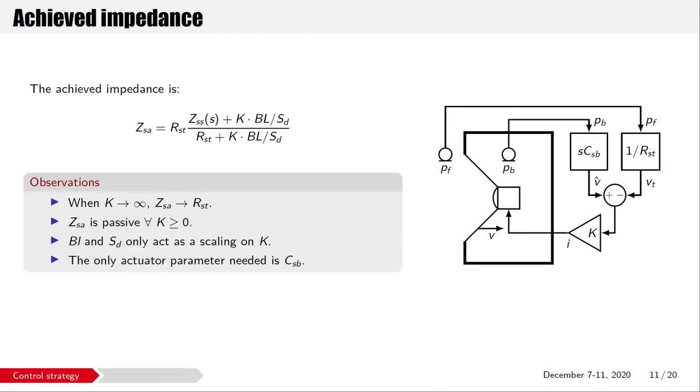The impedance that is achieved on the membrane is called Z_sa. It can be seen that it converges to the target resistance as K tends toward positive infinity. However, if the feedback is too strong, instabilities will happen in practice, mainly due to the digital controller delay. For all positive gains, the achieved impedance is passive, so its resistive part is greater than zero. This is because the target is purely real valued. Although the force factor and the effective piston area appear in the formula, they only act as a scaling on K and are thus not needed to be known precisely. The only needed parameter is the cavity-specific compliance C_sb in order to correctly estimate the velocity of the membrane. This parameter can easily be identified once and for all, using for instance a laser vibrometer or by measuring the cavity volume.